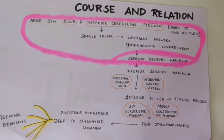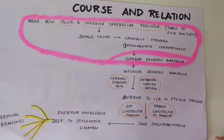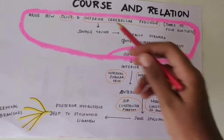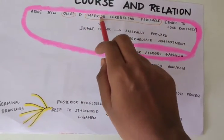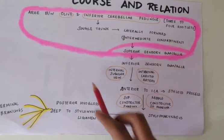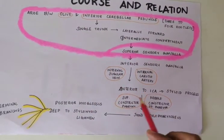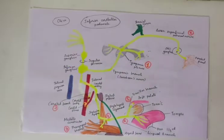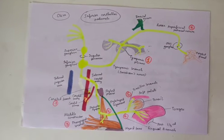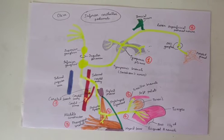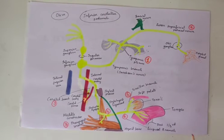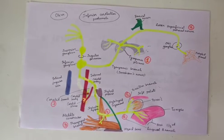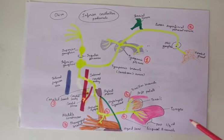I encourage everyone to come up with their own mnemonics for the course and relation. I have come up with a mnemonic considering it like a quest, highlighting the points where the nerve passes between two structures — like going between two monsters — and finally giving out terminal branches. This is a simplified diagram showing the course, relations, and branches of the glossopharyngeal nerve, chosen so that you can reproduce it easily in your exam.